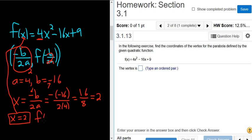So f of 2, that's 4 times 2 squared minus 16 times 2 plus 9. So plugging in 2 for all the x's. 2 squared is 4. 4 times 4 is 16. So we get 16 minus 32 plus 9. 16 minus 32 is minus 16. Then we add 9. So we get minus 7.